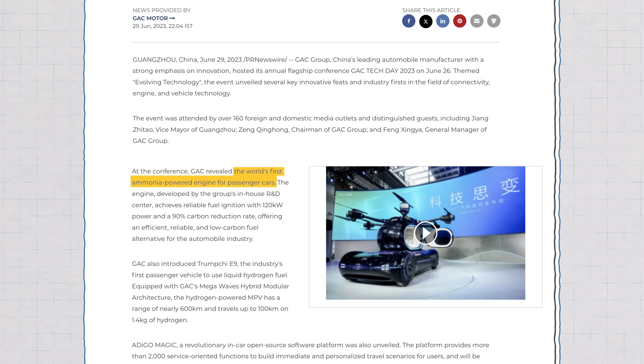GAC announced that it had developed an internal combustion engine based on ammonia, NH3, that cut carbon emissions by 90%. Now, I have to admit that when I read that press release, I was just caught off guard.